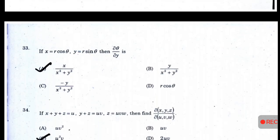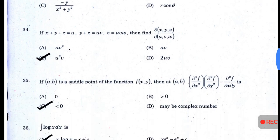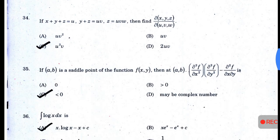If x = r·cos(θ), y = r·sin(θ), then ∂θ/∂y = x/(x² + y²). If x + y + z = u, y + z = uv, z = uvw, then find ∂(x,y,z)/∂(u,v,w) — answer: u²v.